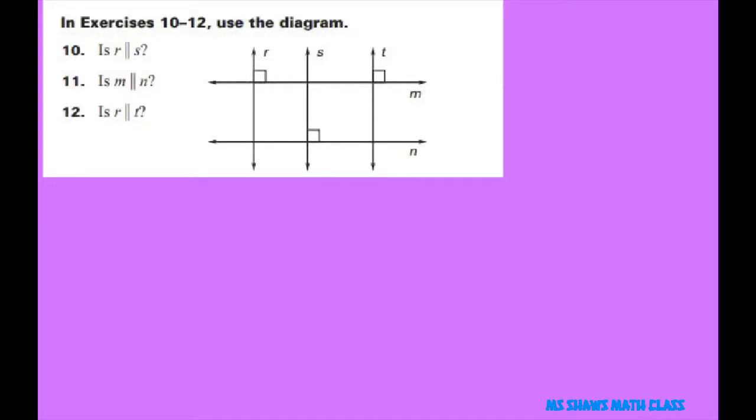So the first thing we're going to see is if R is parallel to S. Even though it has a right angle here, it doesn't have one here. So since these aren't congruent, this would be no because there's no right angle marking there.